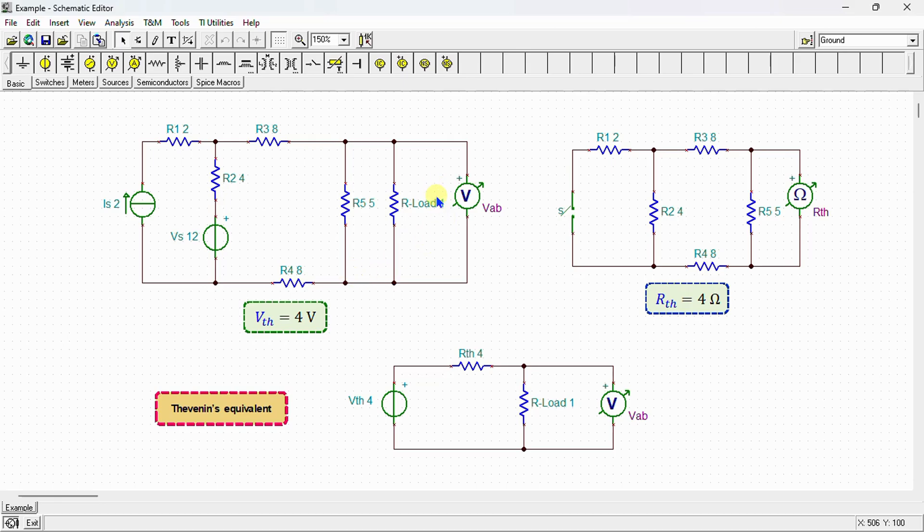Next, I will connect a load, and I will call it RL. In this case, I choose a load of 1 ohm for both circuits, the original circuit and the Thevenin equivalent circuit. And I will simulate their behavior.